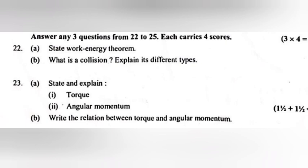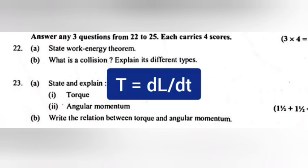23B: What is the relation between torque and angular momentum? Answer: Torque is equal to DL by DT.